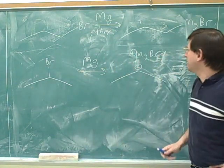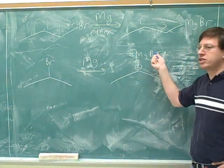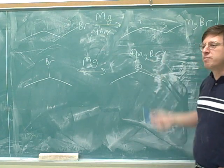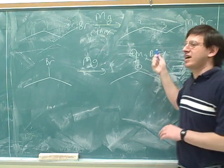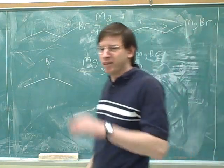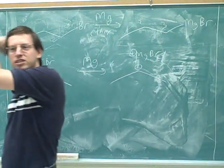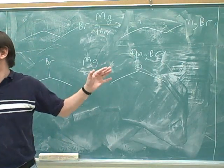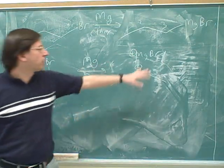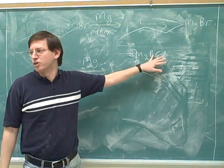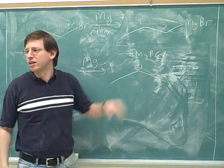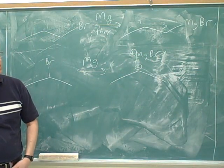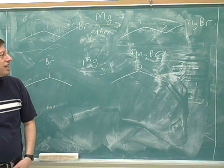It looks like some of you put a charge on the bromine. Remember, nothing is happening with this bromine - its only role in life is to confuse us here. There are no charges on this bromine. Putting a negative charge there would be wrong because there's no ionic bond between magnesium and bromine.